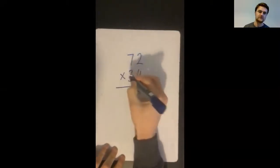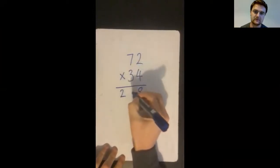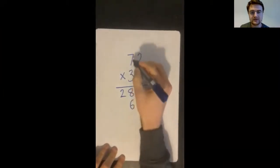I've got my rows. So I've started with the ones, two times four is eight, seven times four is 28. So I'll put the zero in to show that we are doing a multiple of 10.